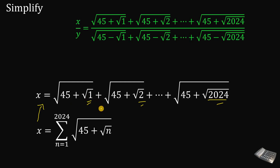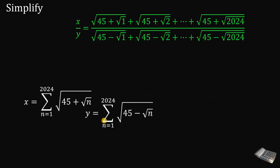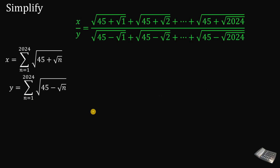We can also do this to the denominator y. So y can be rewritten as the summation of square root of 45 minus square root of n, from n equals 1 up to 2024. Now let's use the values of x and y with summation notation.